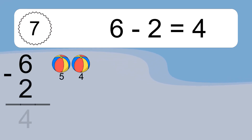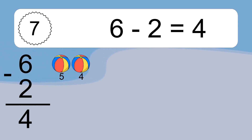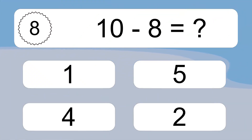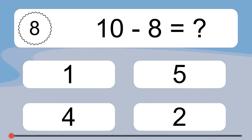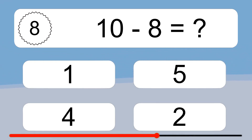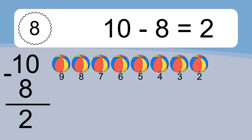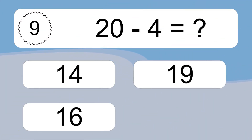Six minus two equals what? Six minus two equals four. Let's count it: 5, 4. Ten minus eight equals what? Ten minus eight equals two. Let's count it: 9, 8, 7, 6, 5, 4, 3, 2.